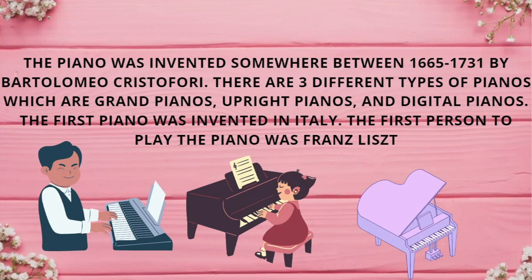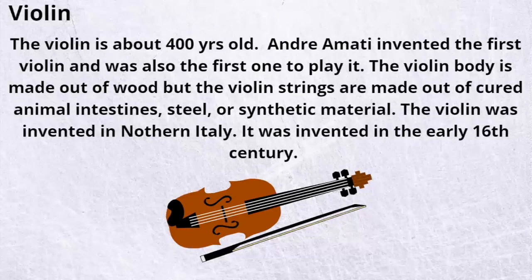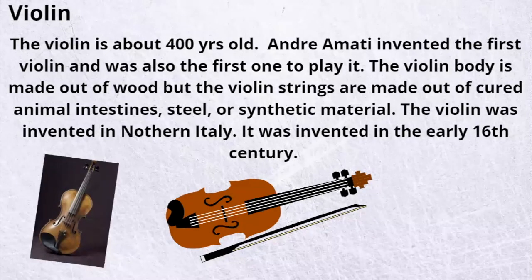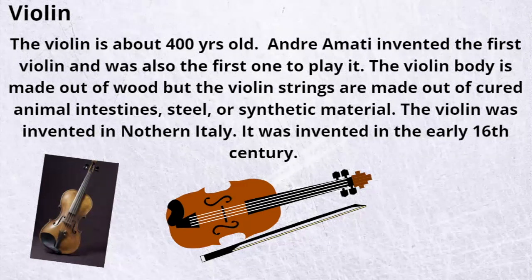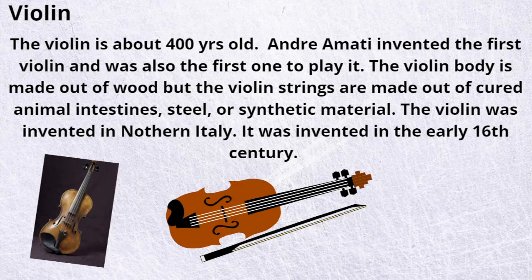The first person to play the piano was Franz Liszt. The violin is about 400 years old. Andrea Amati invented the first violin and was also the first one to play it. The violin body is made out of wood, but the violin strings are made out of gut, animal sinew, steel, or synthetic material. The violin was invented in northern Italy in the early 16th century.